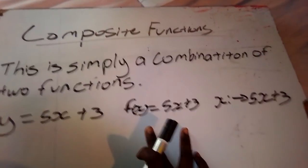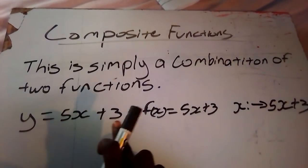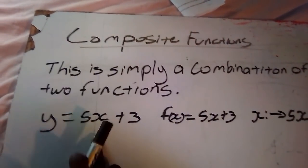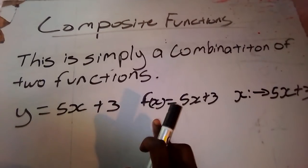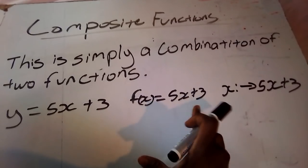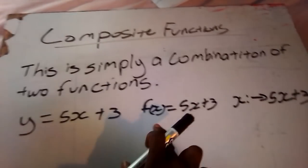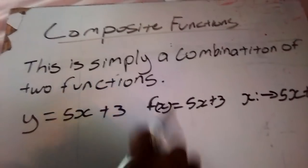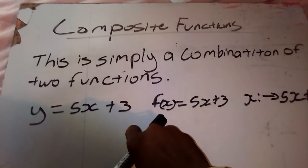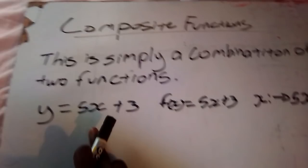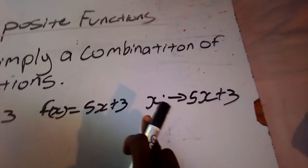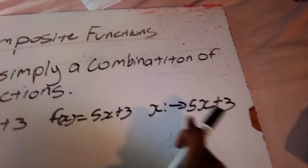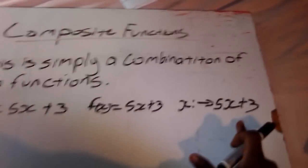As you know, instead of writing y equals 5x plus 3, you could also write f of x is equal to 5x plus 3 — these two are actually the same thing. So you might see it written as y = 5x + 3, or as f(x) = 5x + 3, or as x mapping onto 5x + 3.